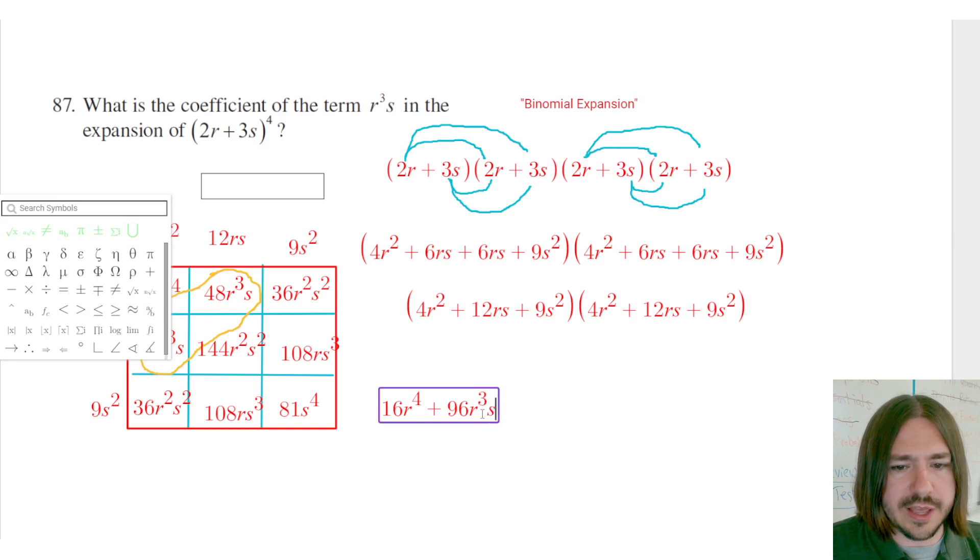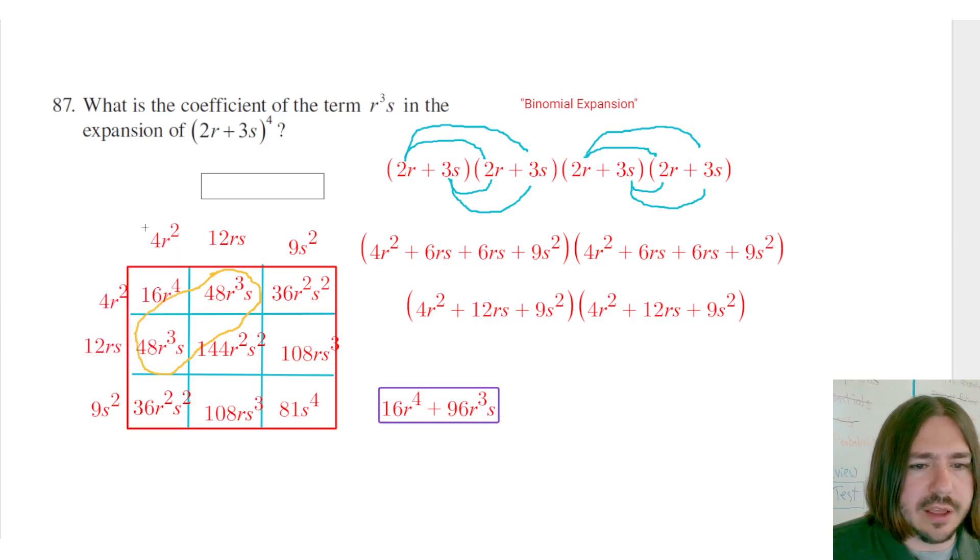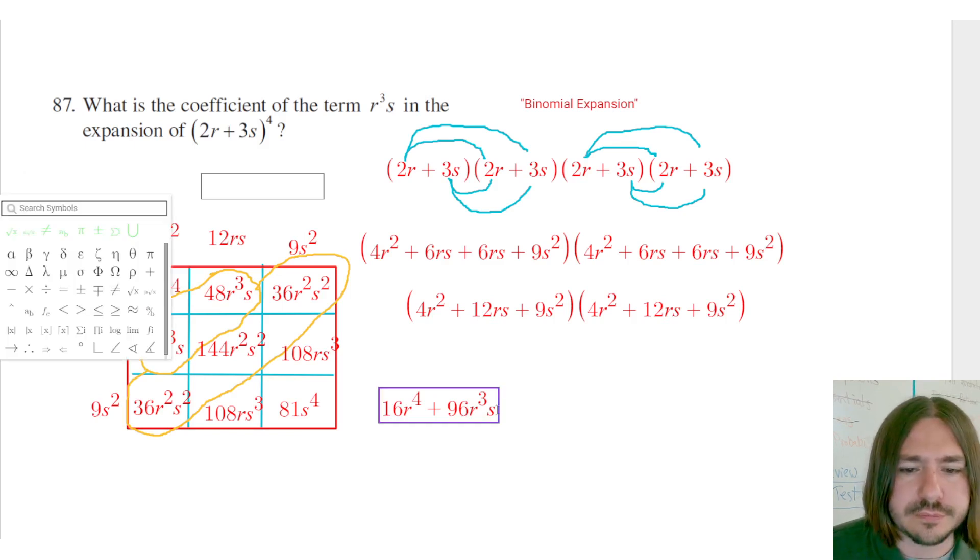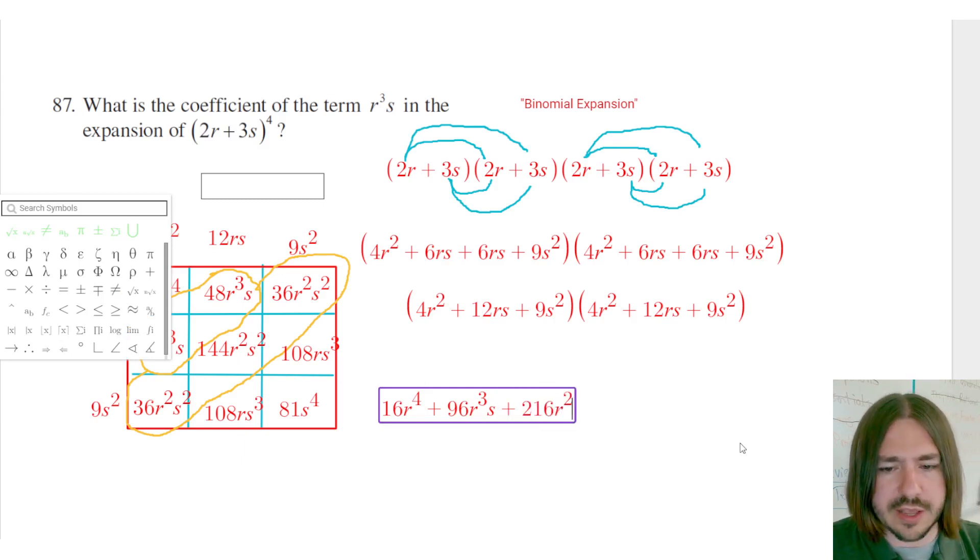96r cubed s. And then I've got actually three like terms here with the r squared s squared. So 36 and 36 would be 72. I'm going to have to break out the old calculator here real quick. 36 plus 144 plus 36 is going to be 216. So plus 216r squared s squared.